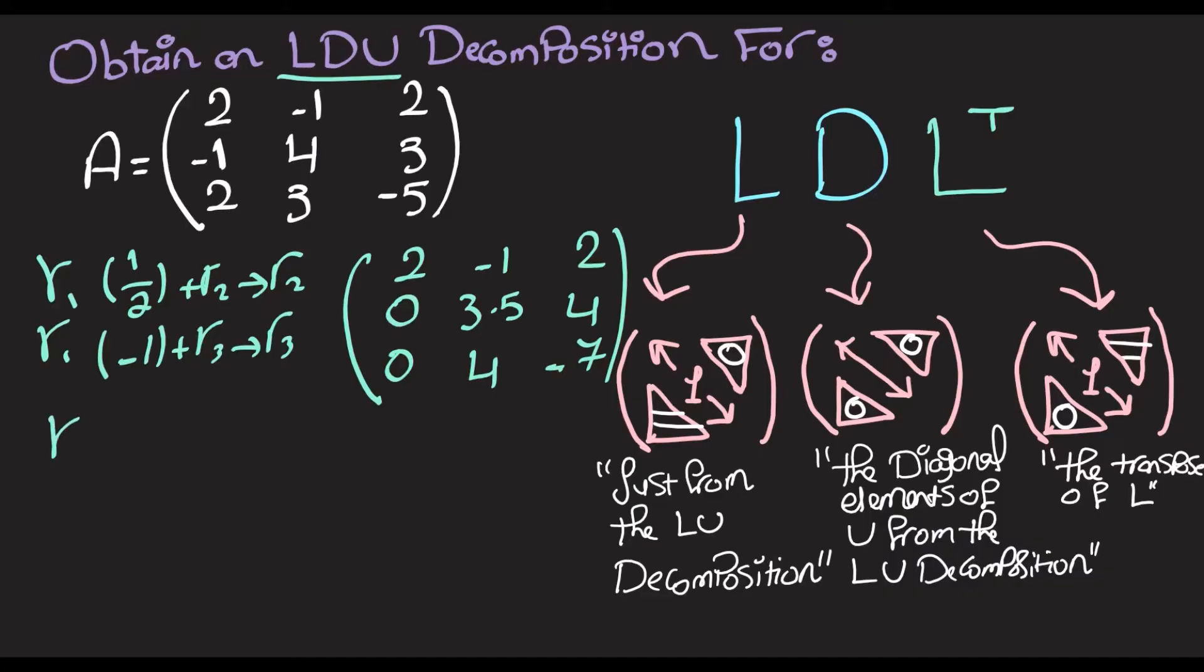Now the next step would be to multiply row two by negative 4 over 3.5, which is gonna be equal to negative 8 over 7, and then add that to row three. First and the second row won't change.